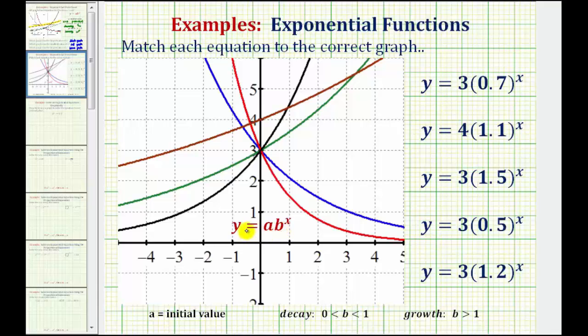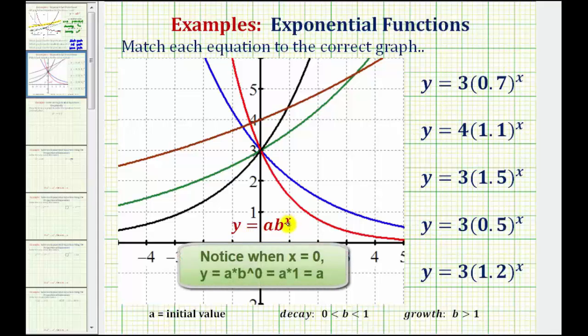For a quick review, a is called the initial value, meaning the function value when x is equal to zero. So if it's the function value when x equals zero, a would also be the y-intercept of the function.